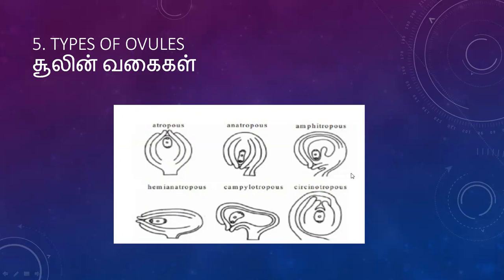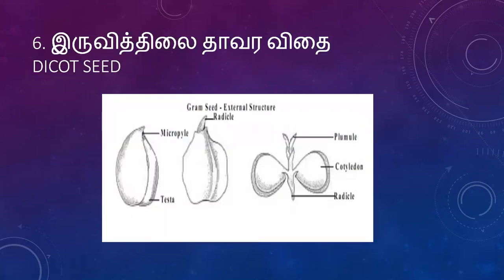This is the diagram of the ovule column. The dicot seed structure includes the radical, embryo, and cotyledon. The dominant anatropous seed is the most common. This is the anatropous side.